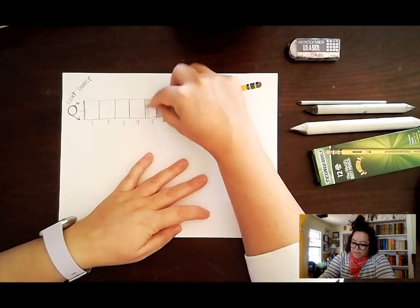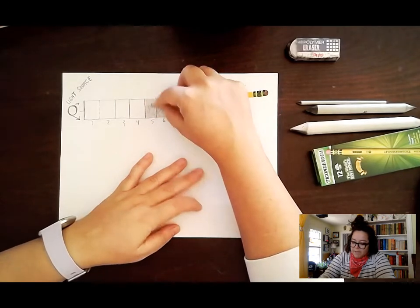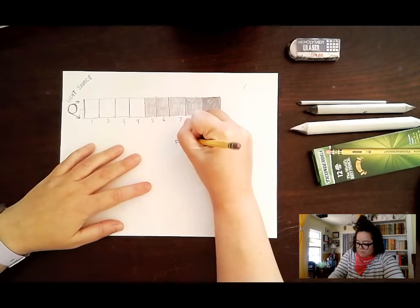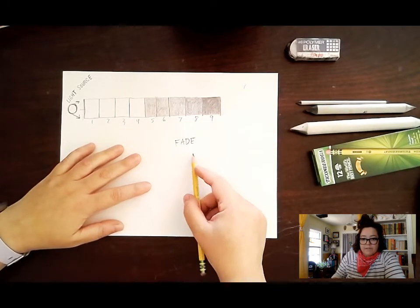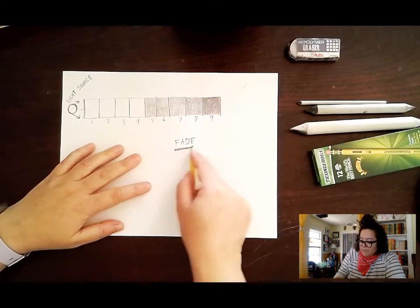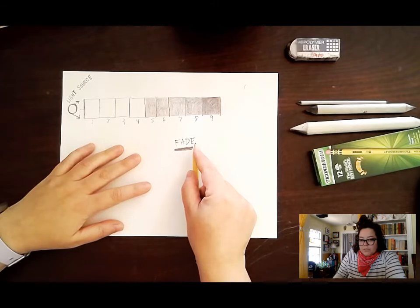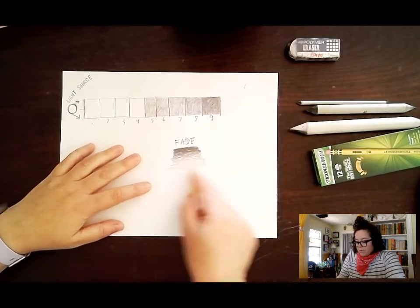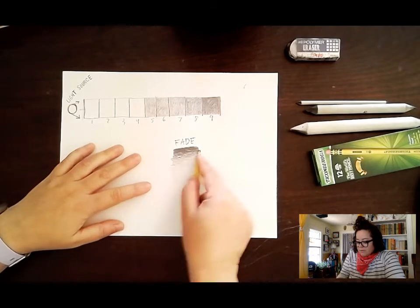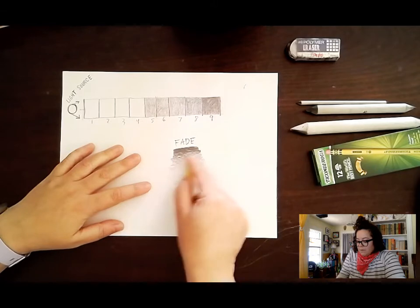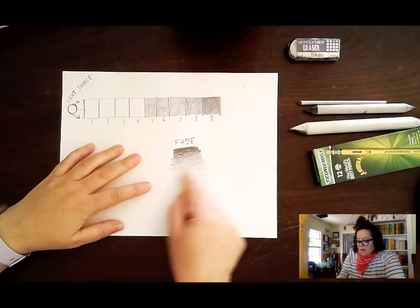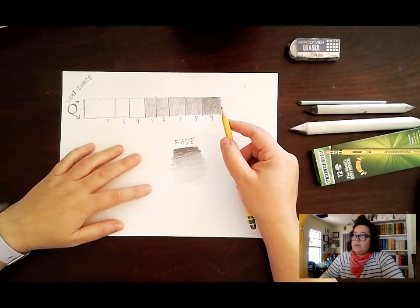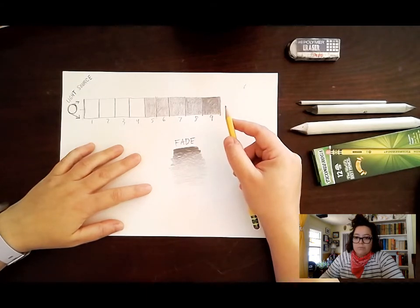So one way that you can do that or practice that is by doing the fade that we talked about. It's just like getting a haircut on the side where it's darkest and then goes down lighter. A fade is going to be where you use the tip of the pencil pointing toward the darkest area, and as you move away from the darkest area, you start to pick up the pencil more and more so that it leaves less and less on the surface of the paper or whatever you're using. This is not really possible to do with markers. You could do it with crayon, colored pencil. Any dry material should work exactly the same.